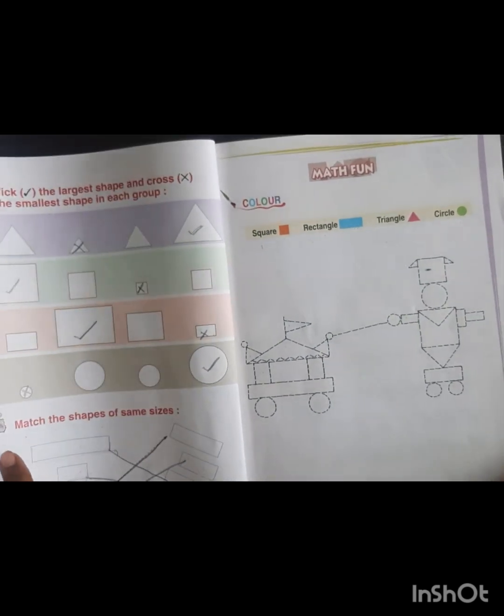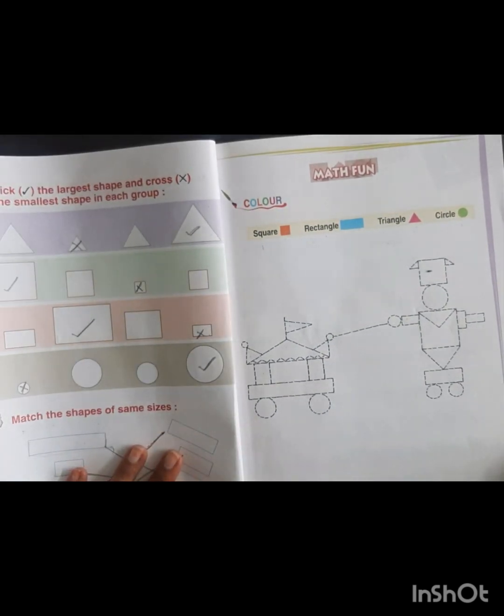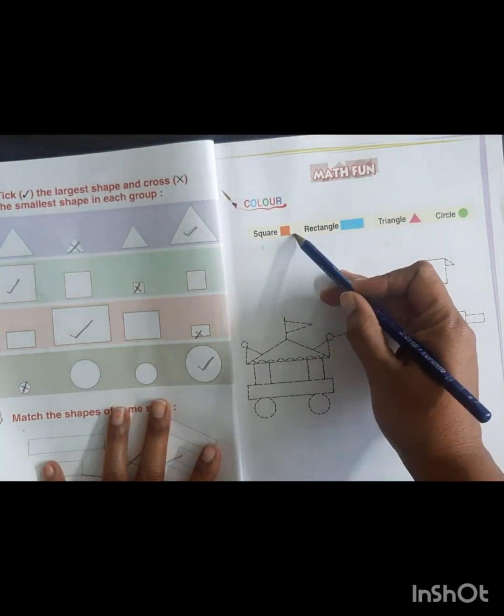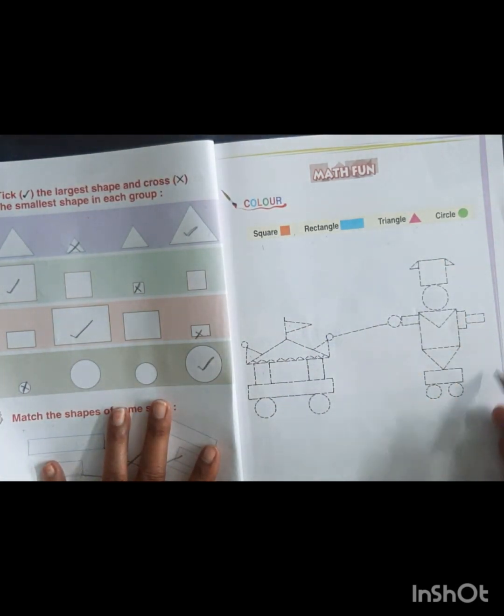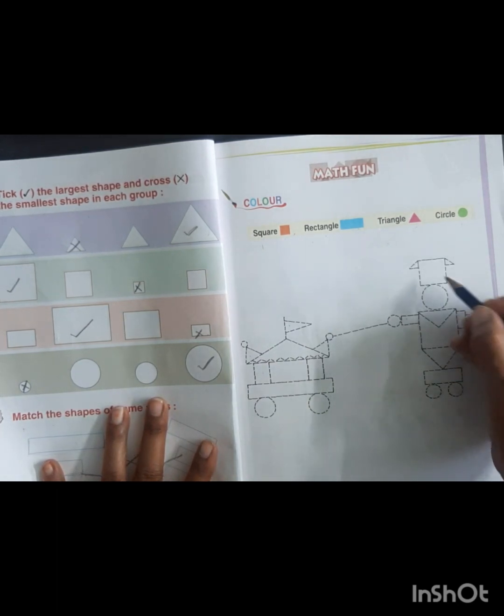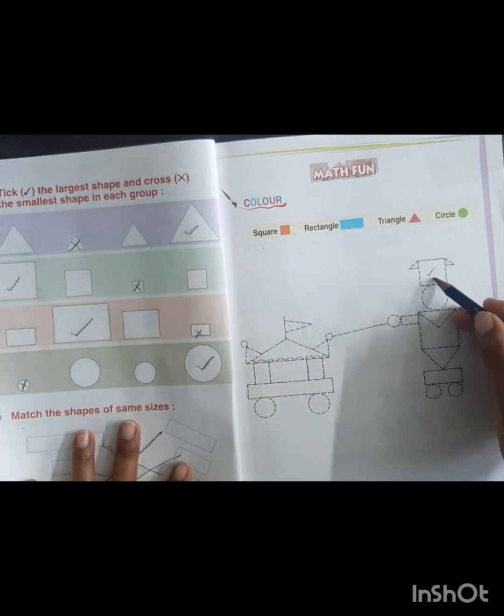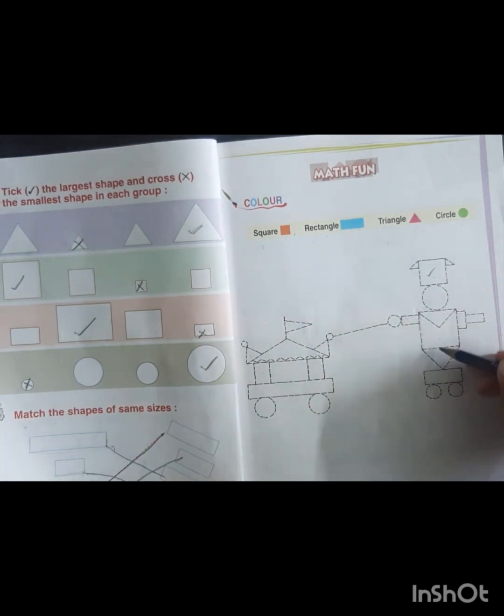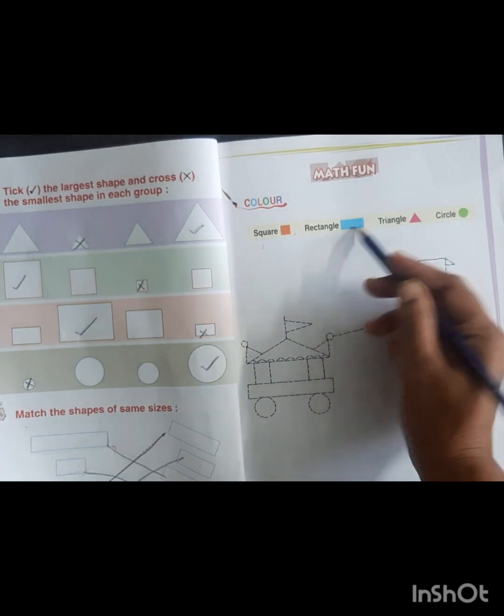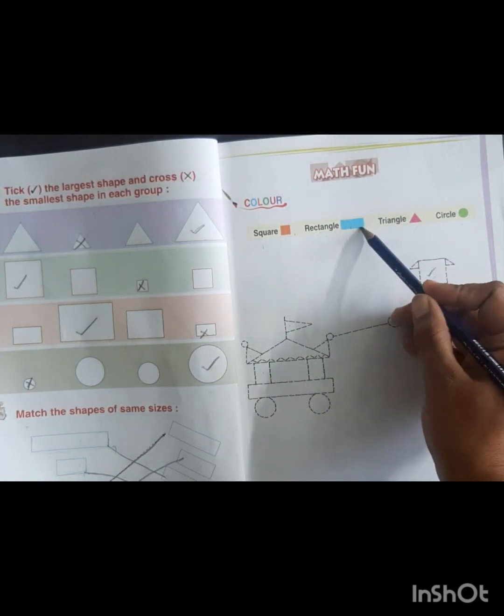Come to the next, Match Fun. It is a very interesting game for you. Square has orange color, so search in this picture where is square. We will find out this square and this square. So we will fill orange color in two squares.